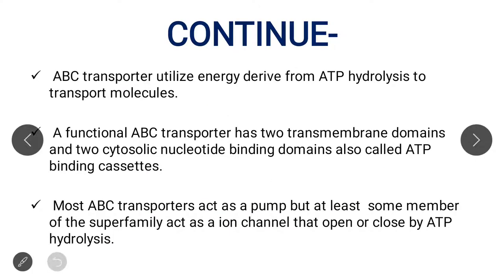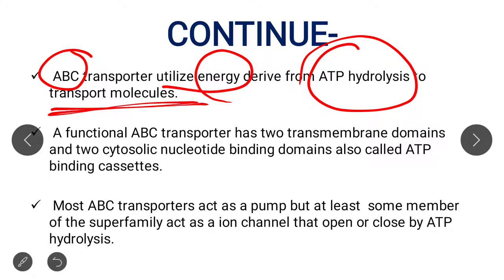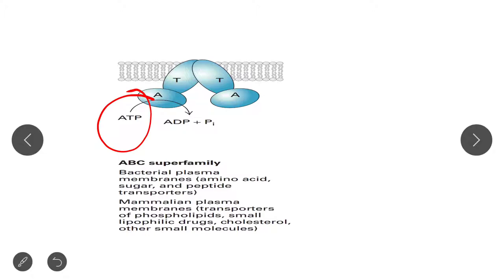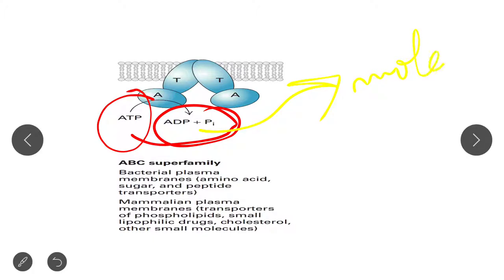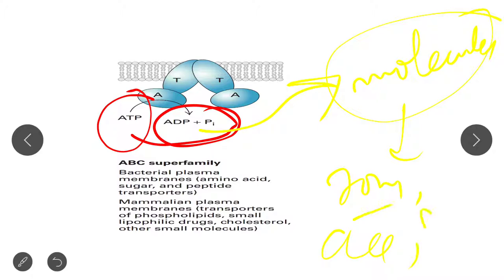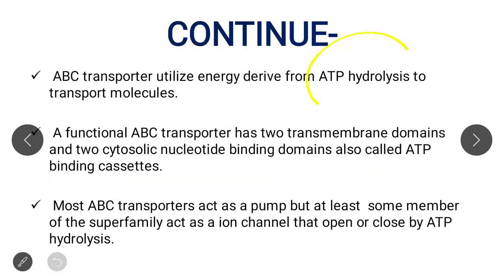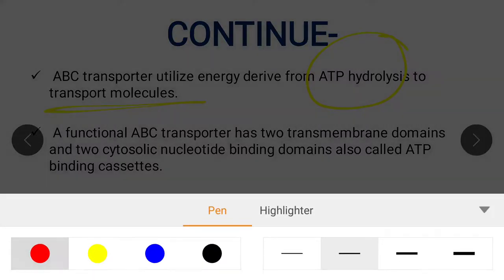As already mentioned, ABC transporters utilize energy derived from ATP hydrolysis to transport molecules. The transporter binds to the ATP molecule, hydrolyzes it to ADP and inorganic phosphate, and by utilizing this hydrolysis energy it transports molecules — either ions, amino acids, or sugars — across the bilayer.